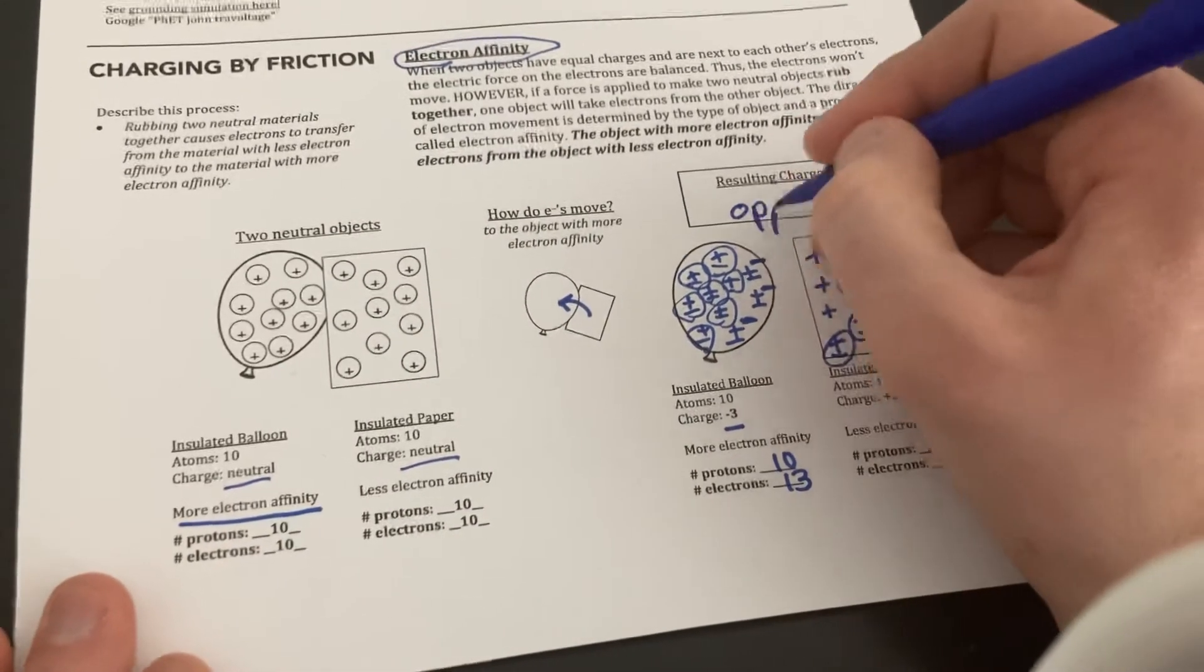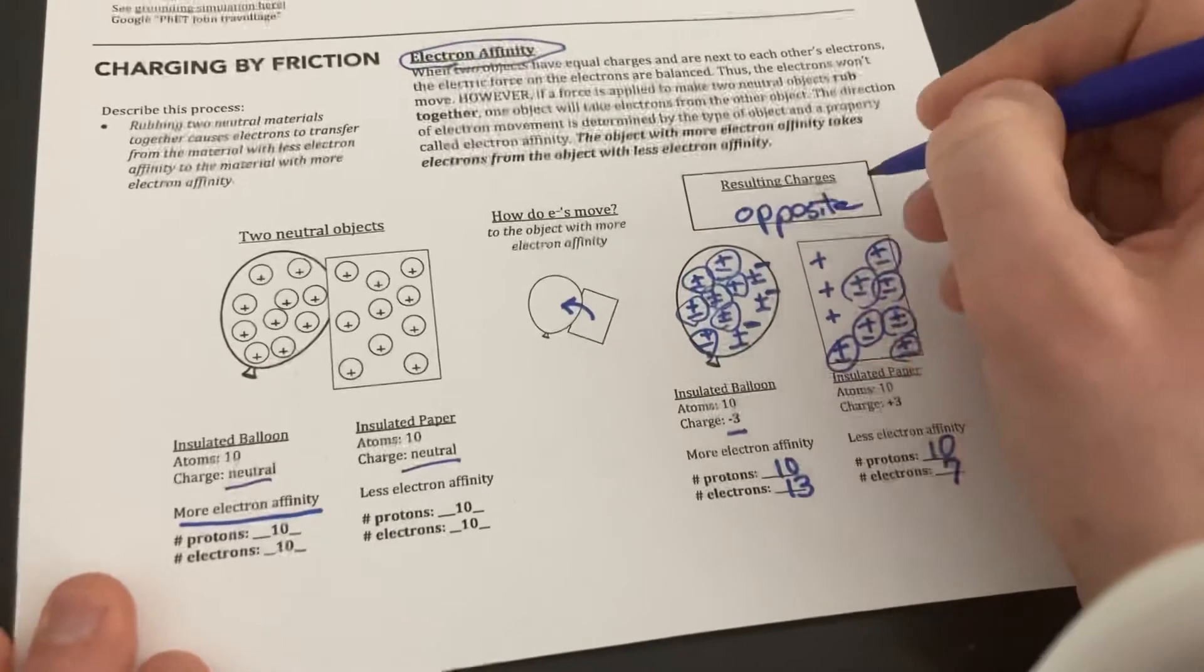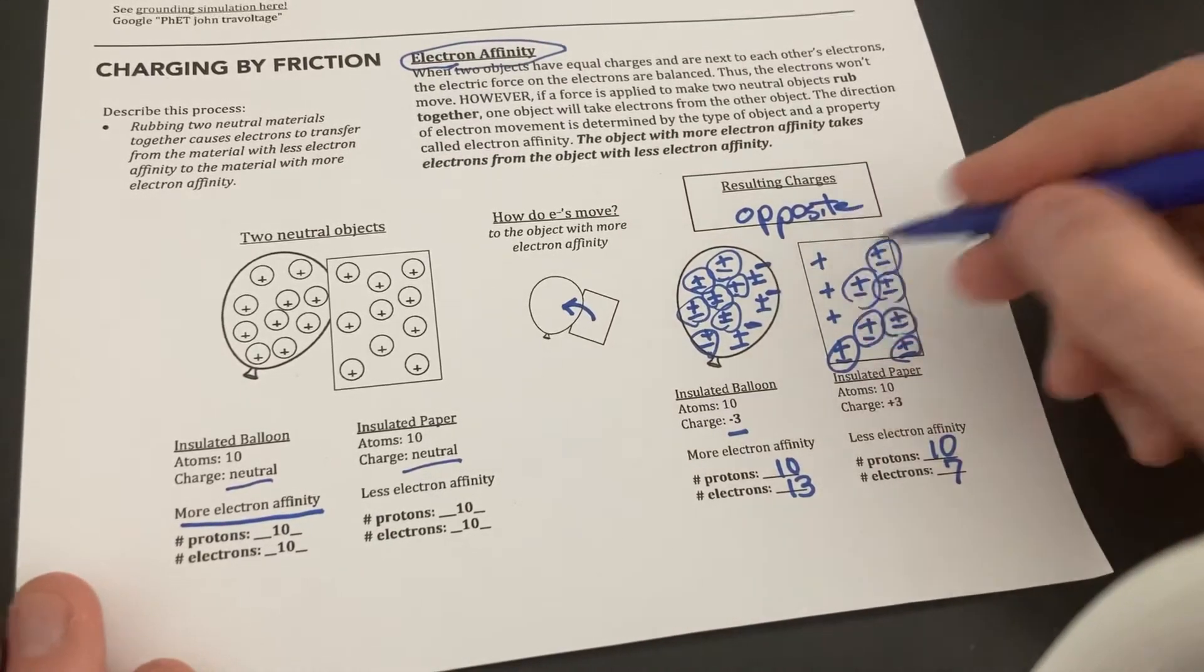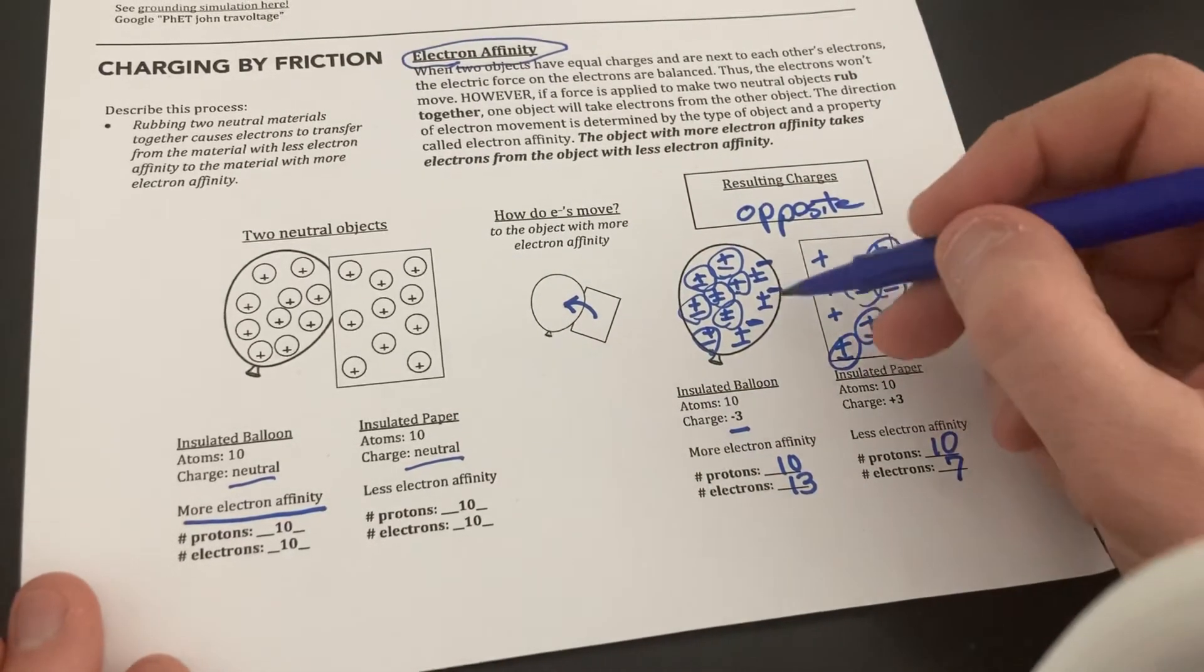And the resulting charges with charging by friction, since some electrons are going from one object to the other, they're always going to end up with opposite charges.